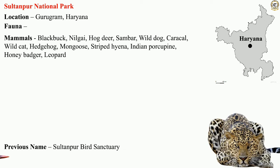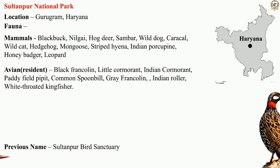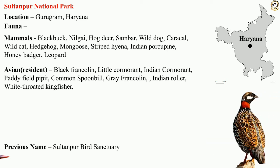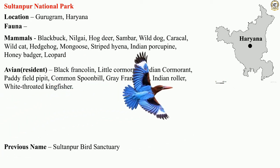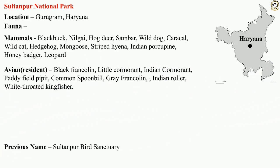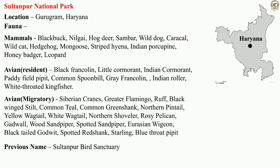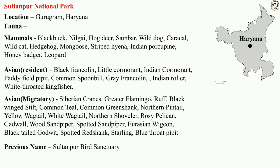Leopard is also found here. The resident avian birds include the black francolin, little cormorant, Indian cormorant, paddy field pipit, common spoonbill, gray francolin, Indian roller, and the white-throated kingfisher. Migratory birds such as the Siberian crane, greater flamingo, black-winged stilt,